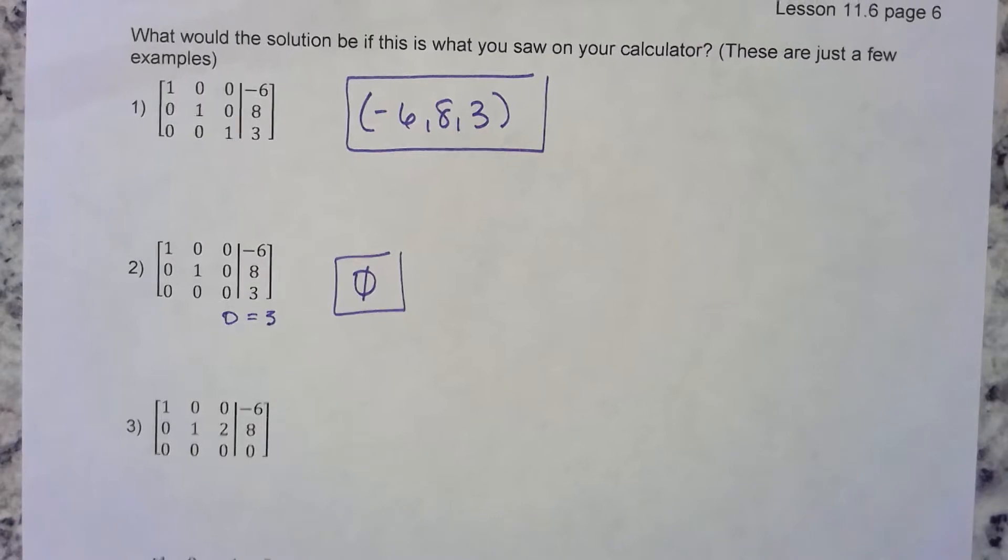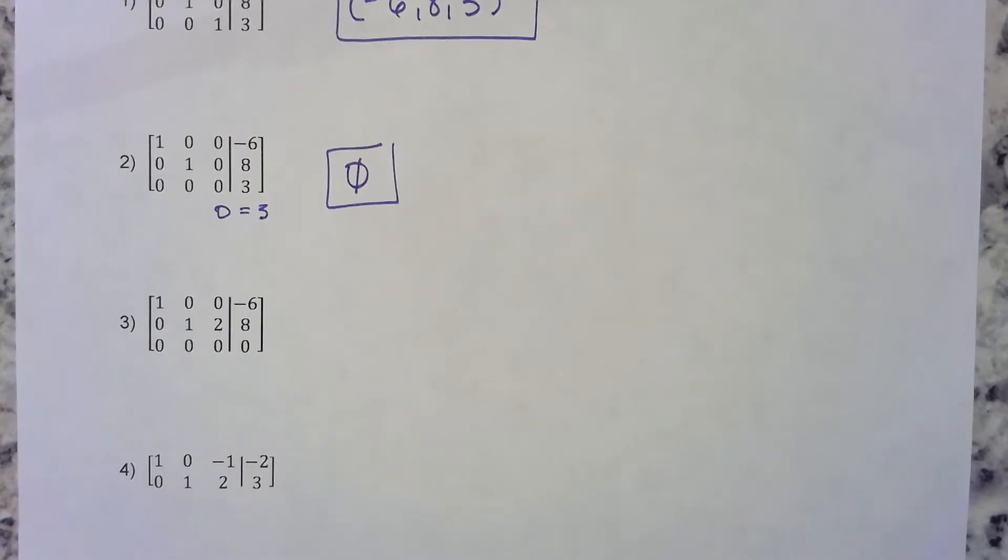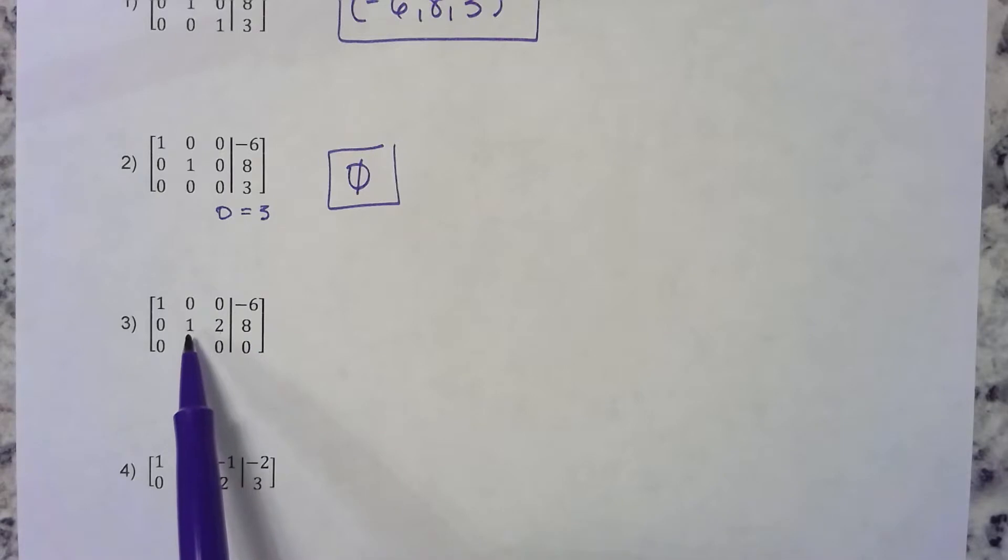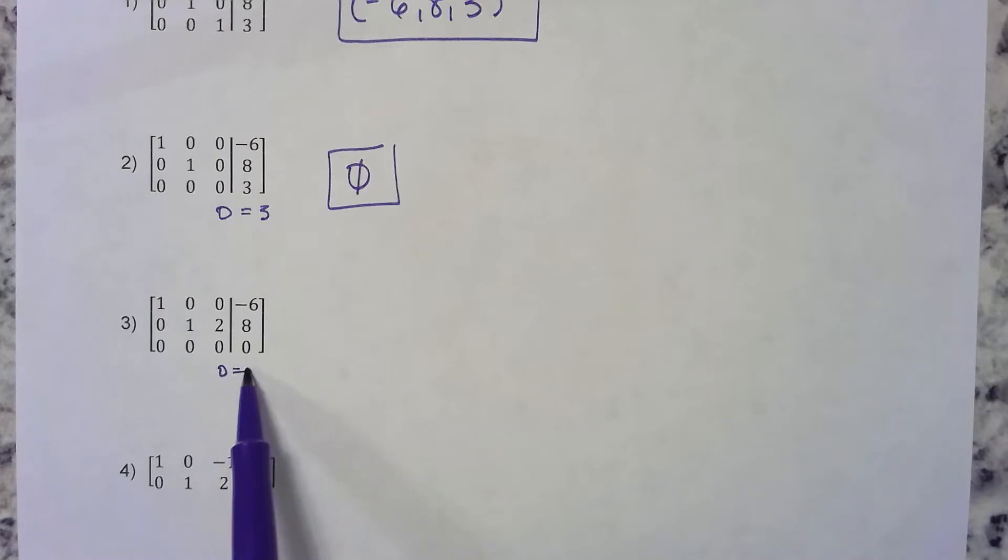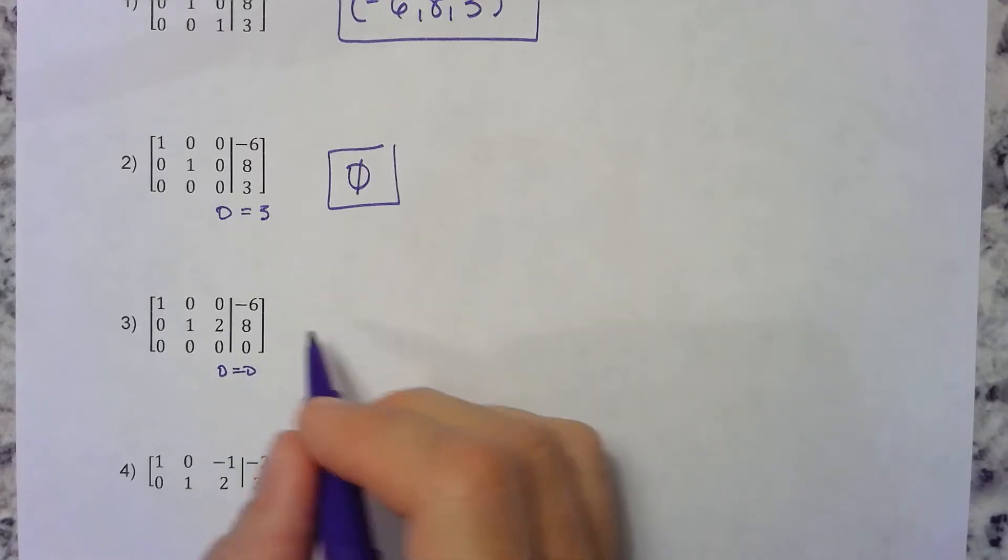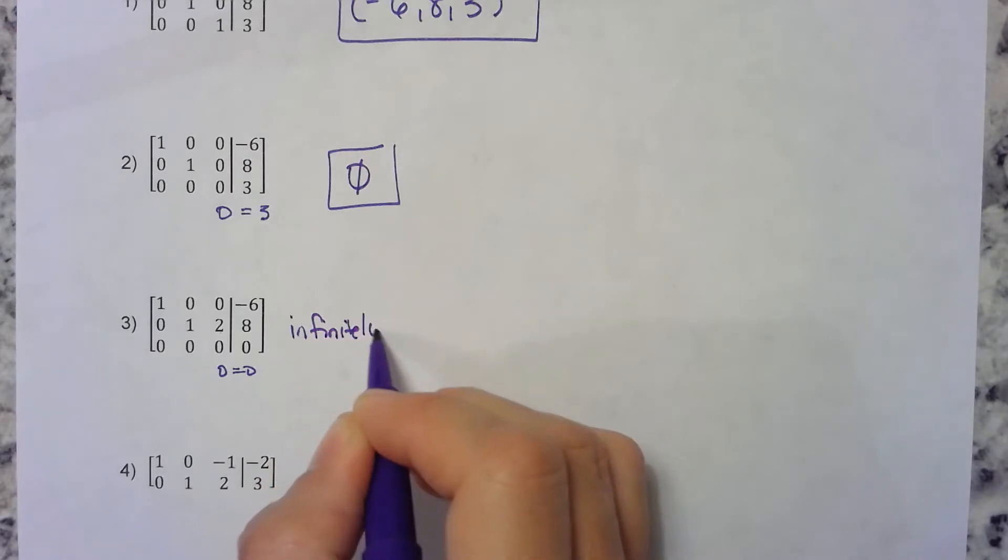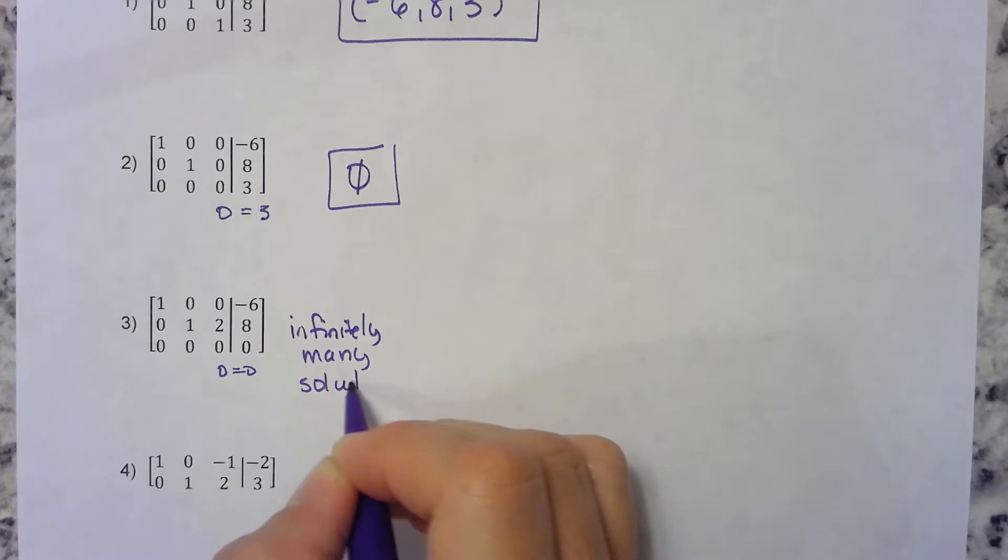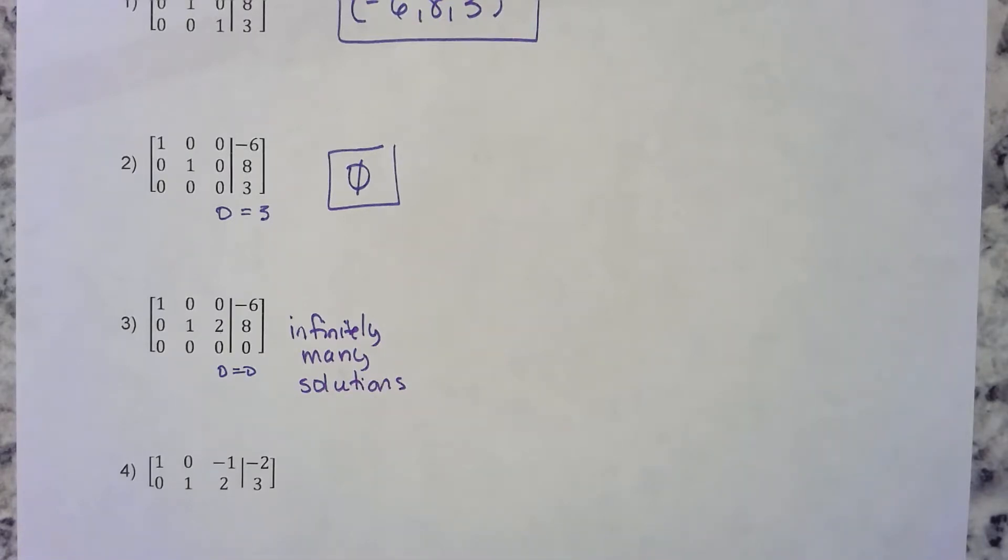What about the next one? X equals negative 6, this actually means y plus 2z equals 8, and this means 0 equals 0. Doesn't that mean infinitely many solutions? It does mean infinitely many solutions, but we have to say what those solutions are.